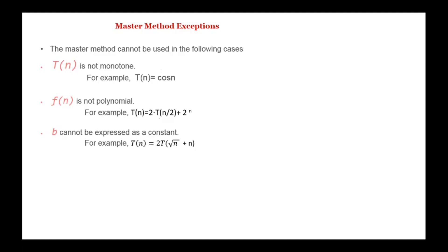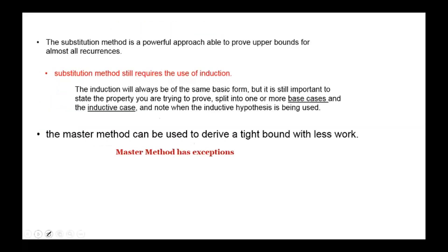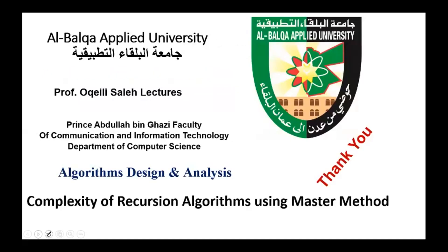The master method is a powerful approach for finding the complexity of recursive algorithms, but it has drawbacks. It cannot be used if T(n) is not monotone, if f(n) is not polynomial, or if the ratio cannot be expressed as a constant. In conclusion, the substitution method is powerful and able to prove upper bounds for almost all recurrences, but it requires induction. The master method can derive a tight bound with less work, but cannot be used in all cases. Thank you.